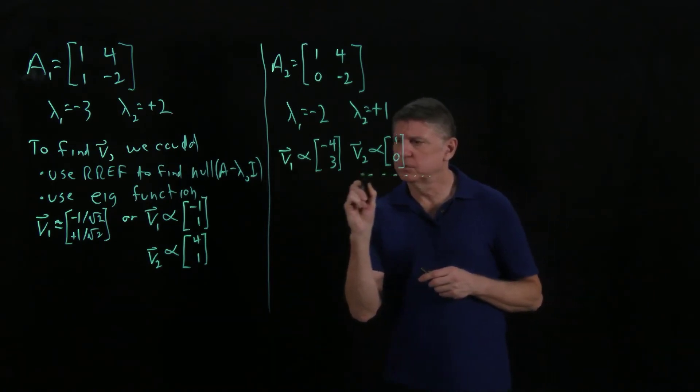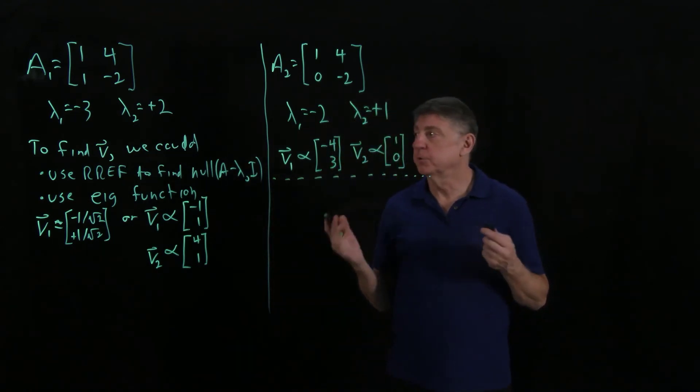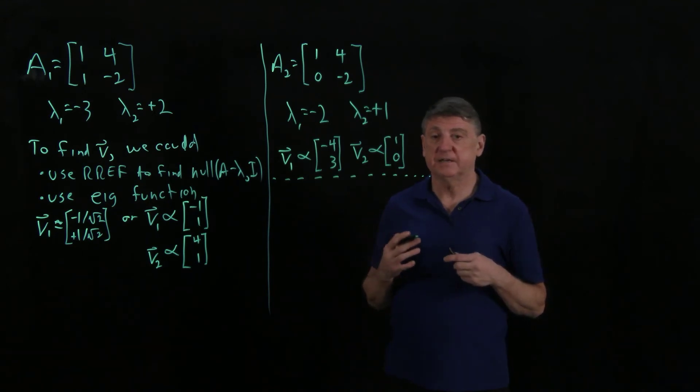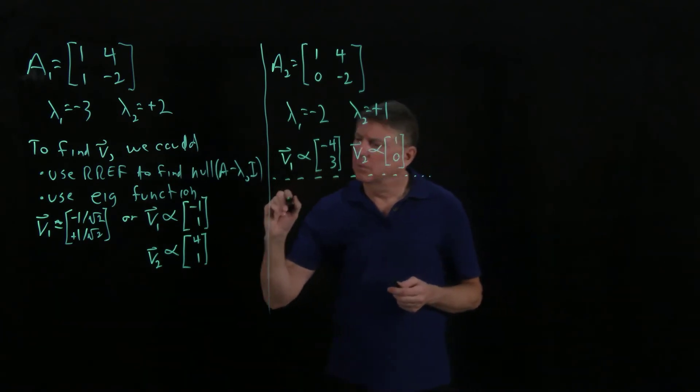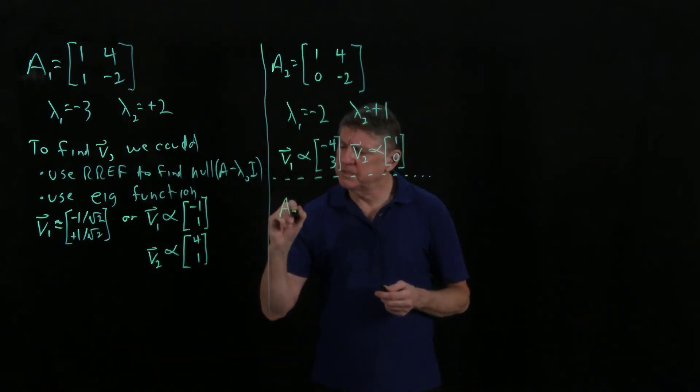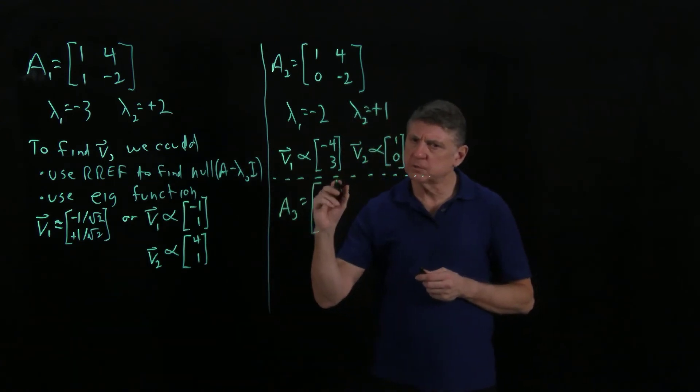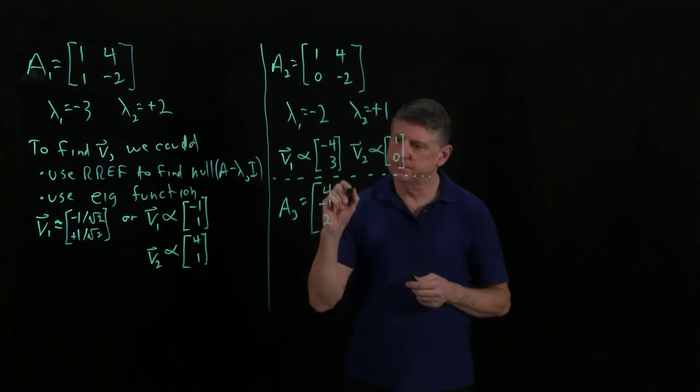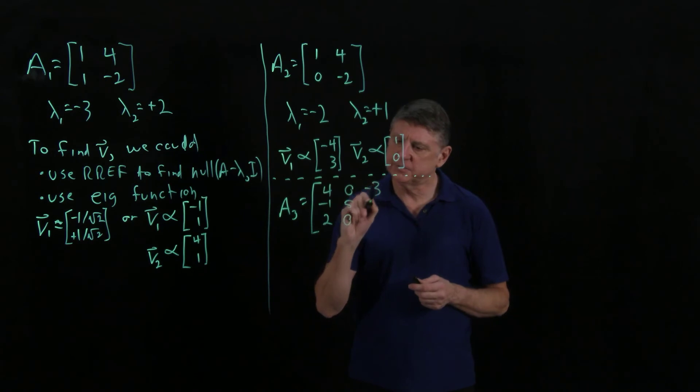Now, let's suppose that we have a 3 by 3. For a 3 by 3, finding the eigenvalues and eigenvectors is more than a small chore. Let's suppose that A3 is this matrix: 4, minus 1, 2, 0, 5, 0, minus 3, minus 3, 11.